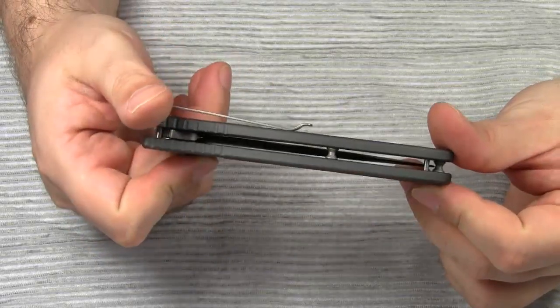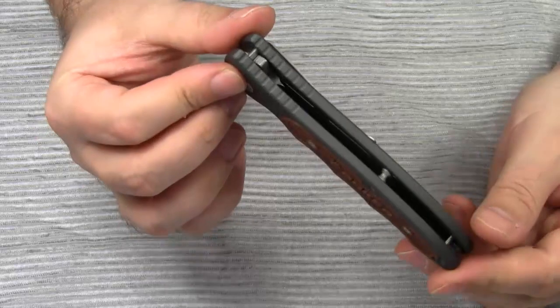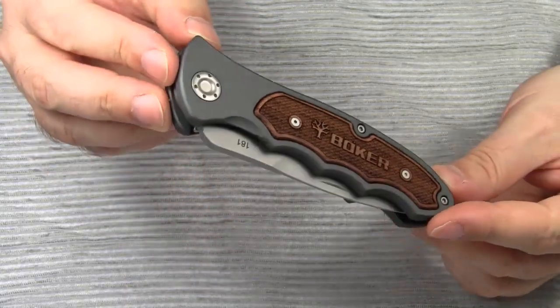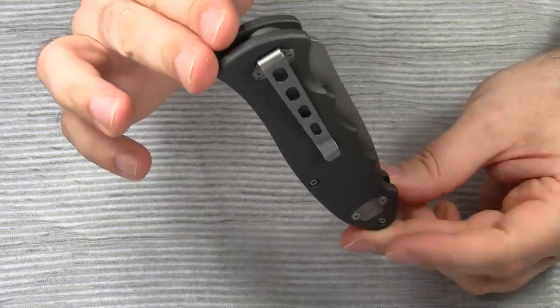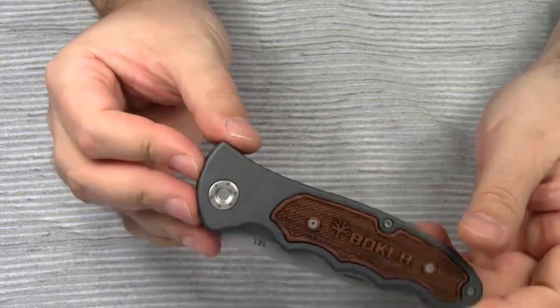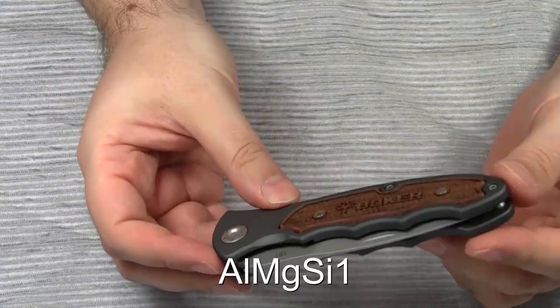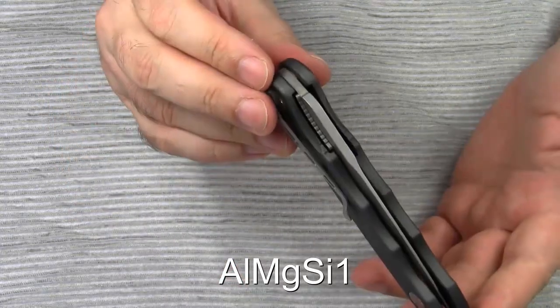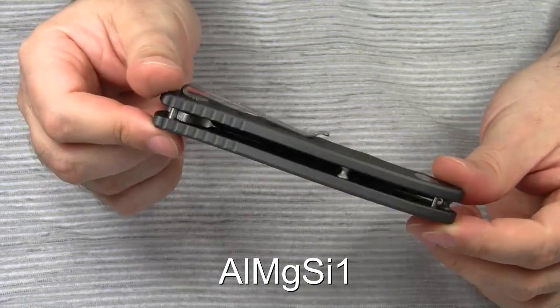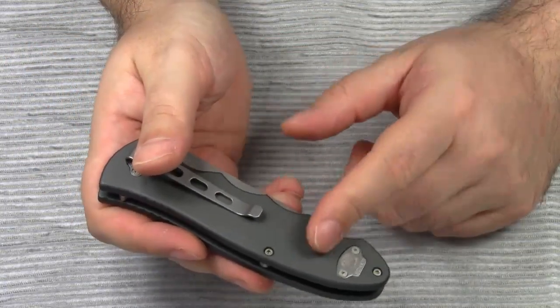The handle is an open construction, which I like a lot because it makes the knife easy to clean. Both handle scales are precisely CNC machined from a high-quality aluminum alloy. Actually, the material is a high-strength aluminum-magnesium-silicon alloy, which also has a high corrosion resistance against seawater. That's why rudder stocks and rudder bearings are also made of this material.